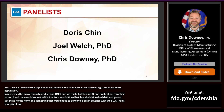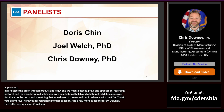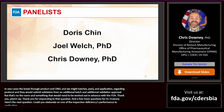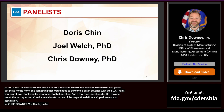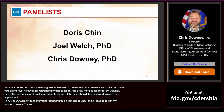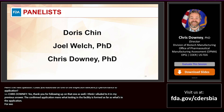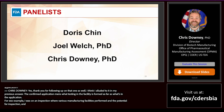Next question for Dr. Downey: could you elaborate on the inspection deficiency category 'conformance to application'? Conformance to application means: are the manufacturing and testing activities being performed at the facility matching what is described in the application? For example, on one inspection there were manufacturing steps being performed at the facility that were not described in the application — that creates a potential concern. One of the objectives of an inspection is to make sure the process being licensed matches the process actually performed on site.